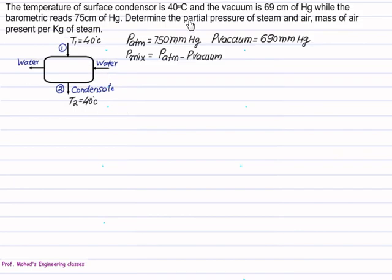The temperature of the condenser is given as 40 degrees Celsius. So we assume T1 equals T2 equals 40 degrees Celsius. The vacuum is given as 69 cm of Hg. Barometer reads 75 cm of Hg. So we can find out P_mix which equals atmospheric minus P_vacuum. To find the partial pressure of steam and air we have to use Dalton's law. Mass of air can be found out using the ideal gas equation.